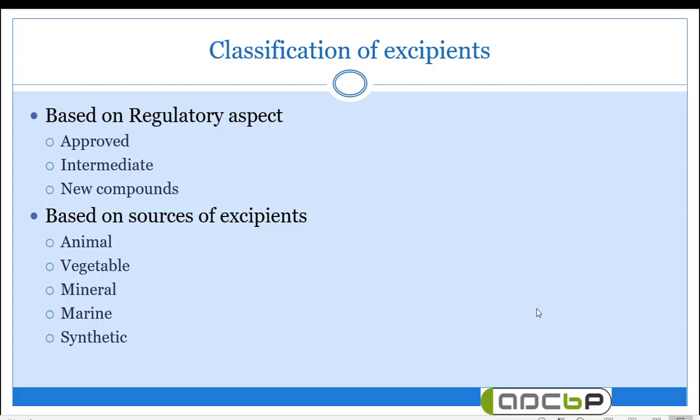Next is classification based on the sources of excipients. Excipients can be obtained from animal source, vegetable or plant source, mineral source, marine source, as well as synthetic sources — that is, excipients made in a chemical laboratory. Animal source excipients include beeswax, honey, and spermaceti wax.